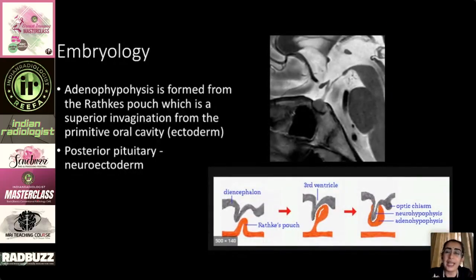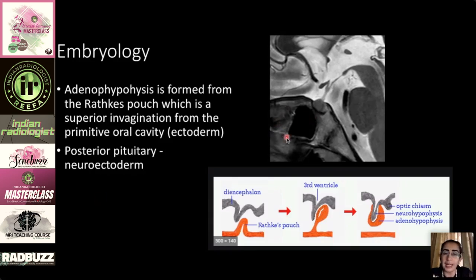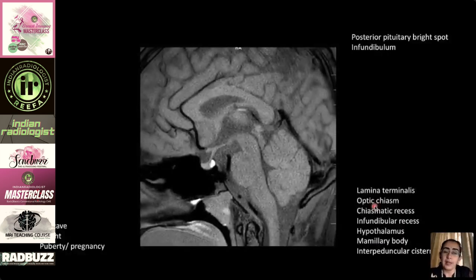Starting with embryology: the pituitary gland lies in the sella and has two parts — the anterior pituitary or adenohypophysis, and the posterior pituitary. Both arise from the ectoderm but have different origins. The adenohypophysis is formed from Rathke's pouch, which is a superior invagination from the primitive oral cavity. The posterior pituitary arises from the neuroectoderm, and the anterior pituitary wraps around the optic chiasm.